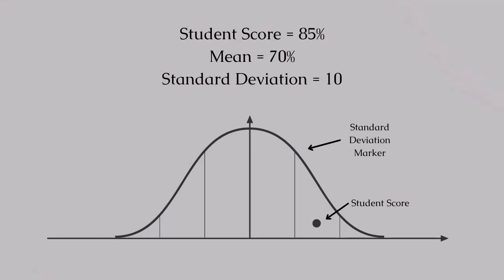Now, a student asks: 'I scored 85%. How do I compare to everyone else?' Here, the bell curve comes in handy. If the mean is 70% and the standard deviation is 10, our student's score is 1.5 standard deviations above the mean. Knowing that roughly 95% of students score within two standard deviations, we can confidently say that this student performed better than the majority of test takers.